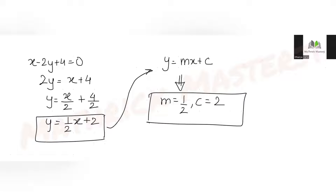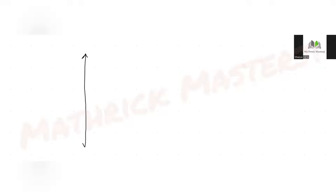Since the slope is positive (1/2), it's an ascending line. Drawing this on a coordinate system: we have the y-axis and x-axis, and the line passes through (0, 2) going upward to the right.